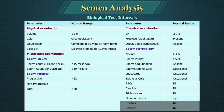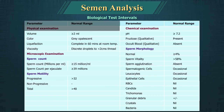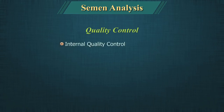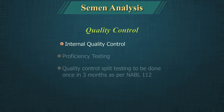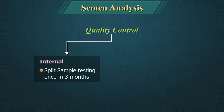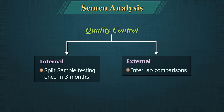Granular debris may be present (plus or minus); crystals nil; bacteria nil. All semen samples should be handled cautiously, wearing gloves and masks, as they are a potential biohazard. The sample should be discarded following biological waste management guidelines. Quality control includes internal quality control using proficiency testing — that is, split sample testing done regularly by two technicians on the same sample. External quality control should be carried out quarterly by inter-lab comparisons.